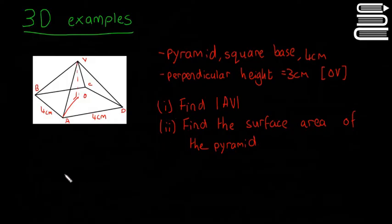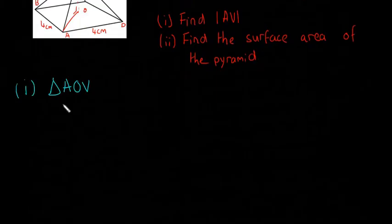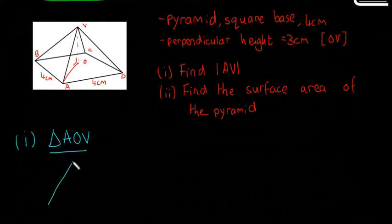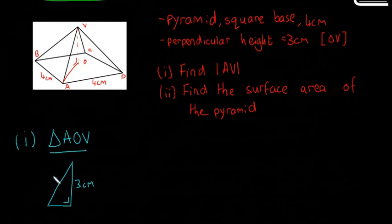First I'm going to look at question 1, then we'll look at question 2. The first thing I'm going to do is draw out the triangle AOV. That's going to be a right angle triangle like this. We know that the perpendicular height VO is going to be 3 centimeters, and we label the vertices V, A, and O. I'm going to call the length AV as X.